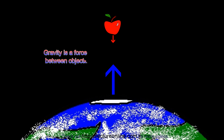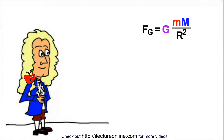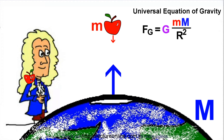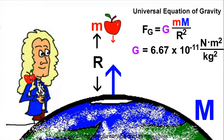He was able to formulate an equation now known as the Universal Equation of Gravity, which indicated that the force between objects was simply the product of the masses of the two objects, divided by the distance squared, times some constant known as the Universal Gravitational Constant.